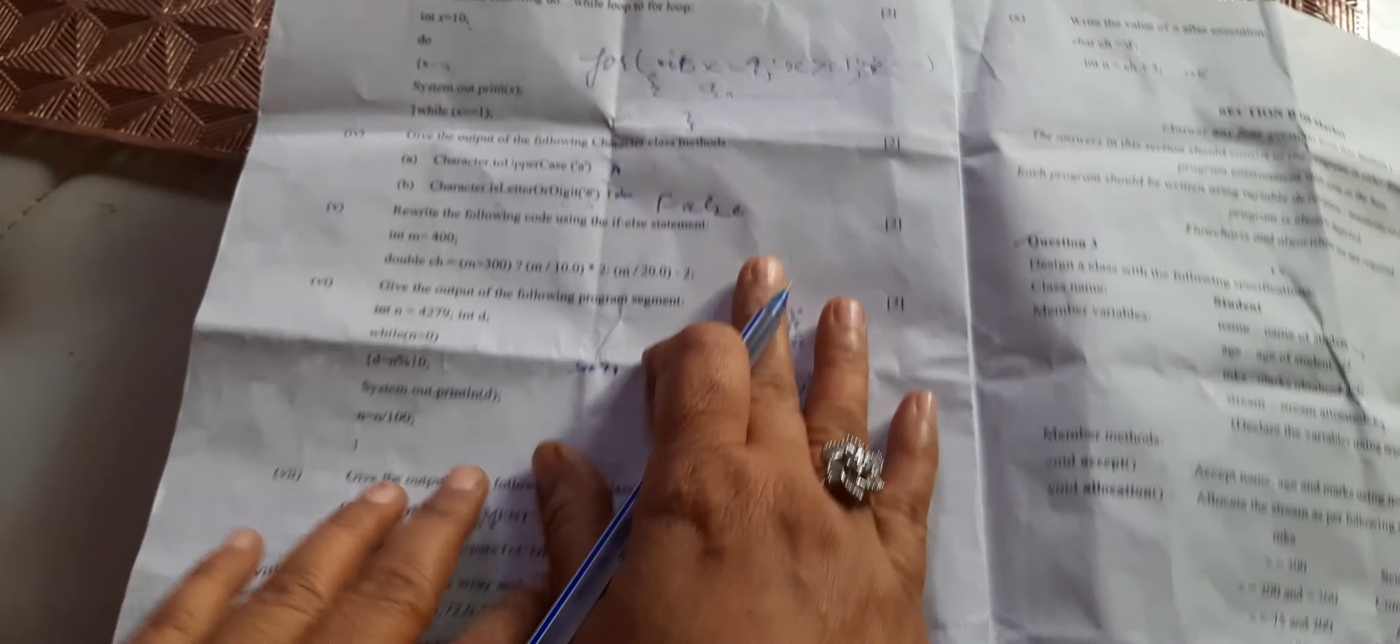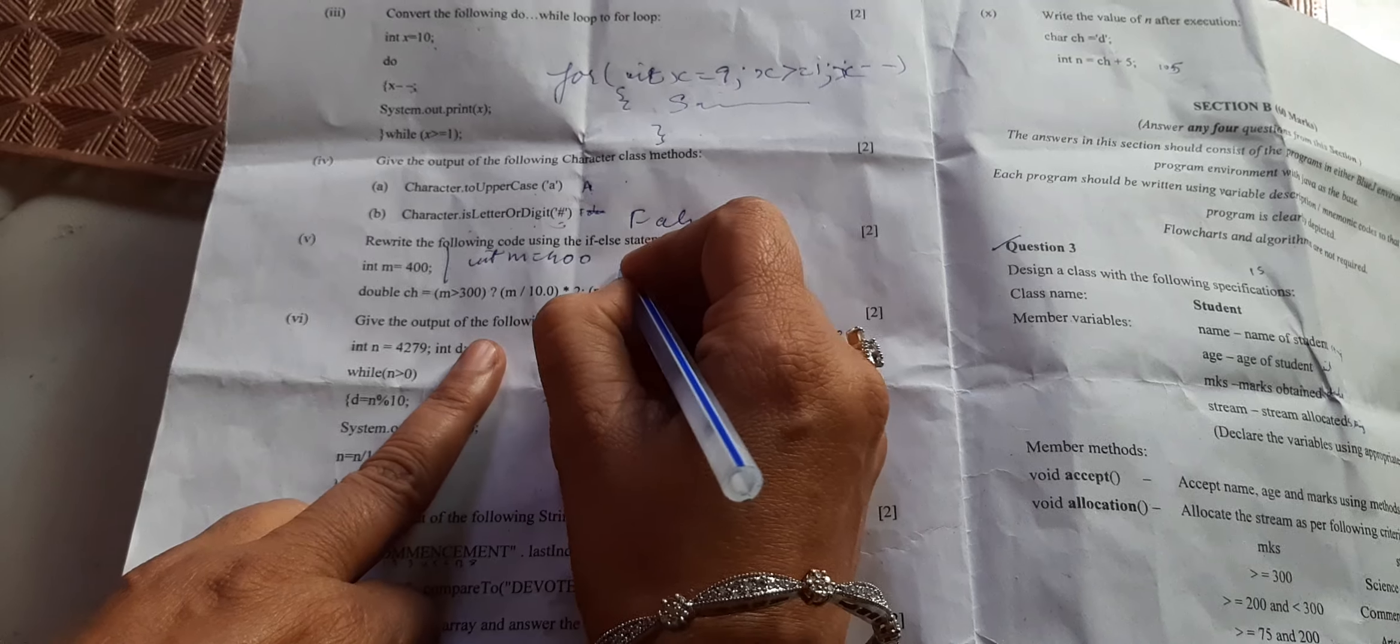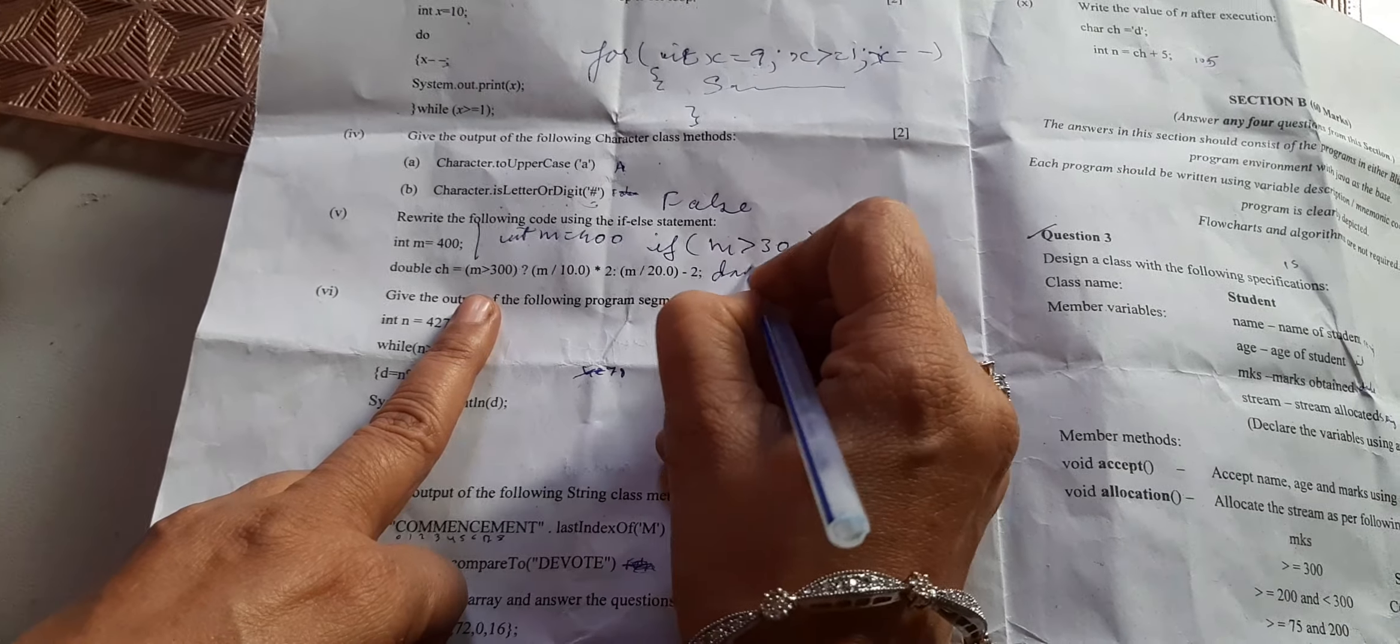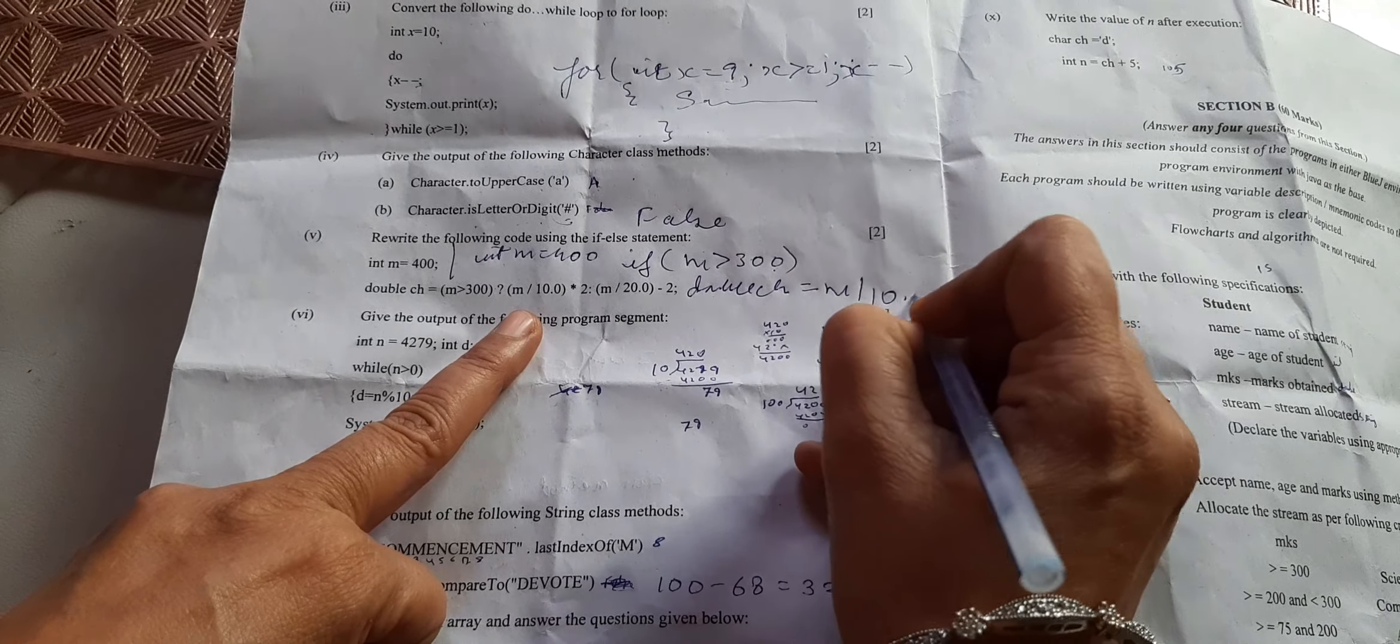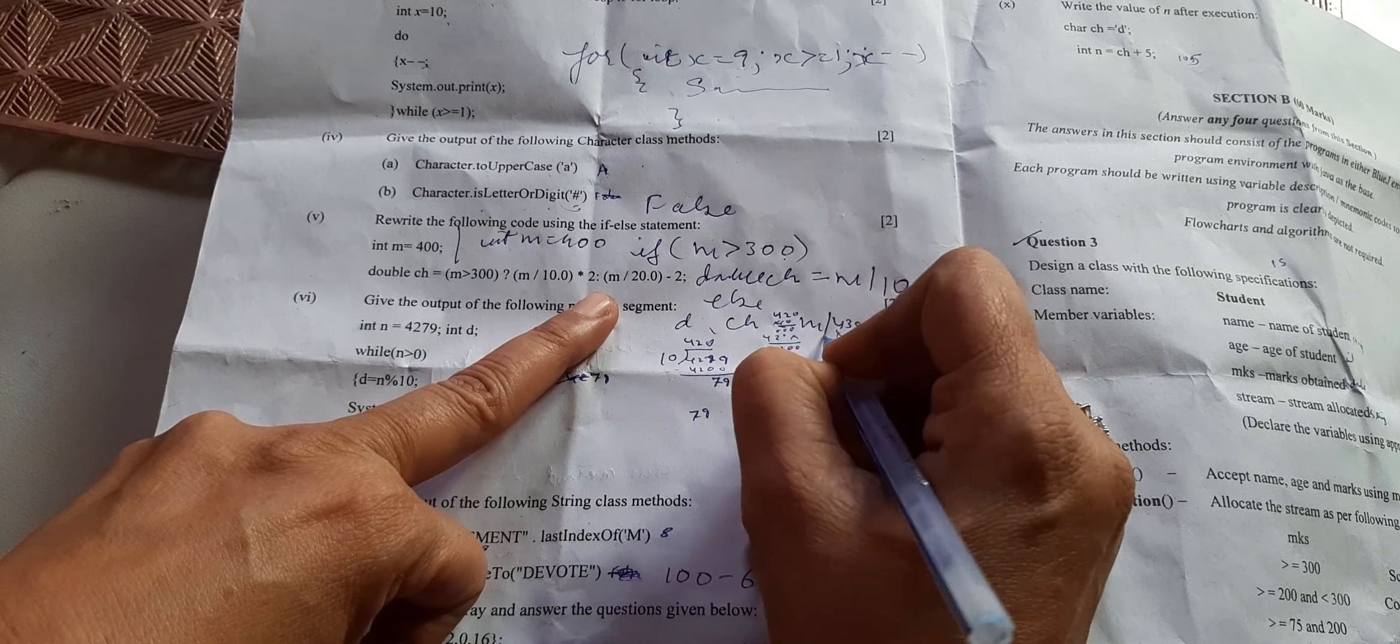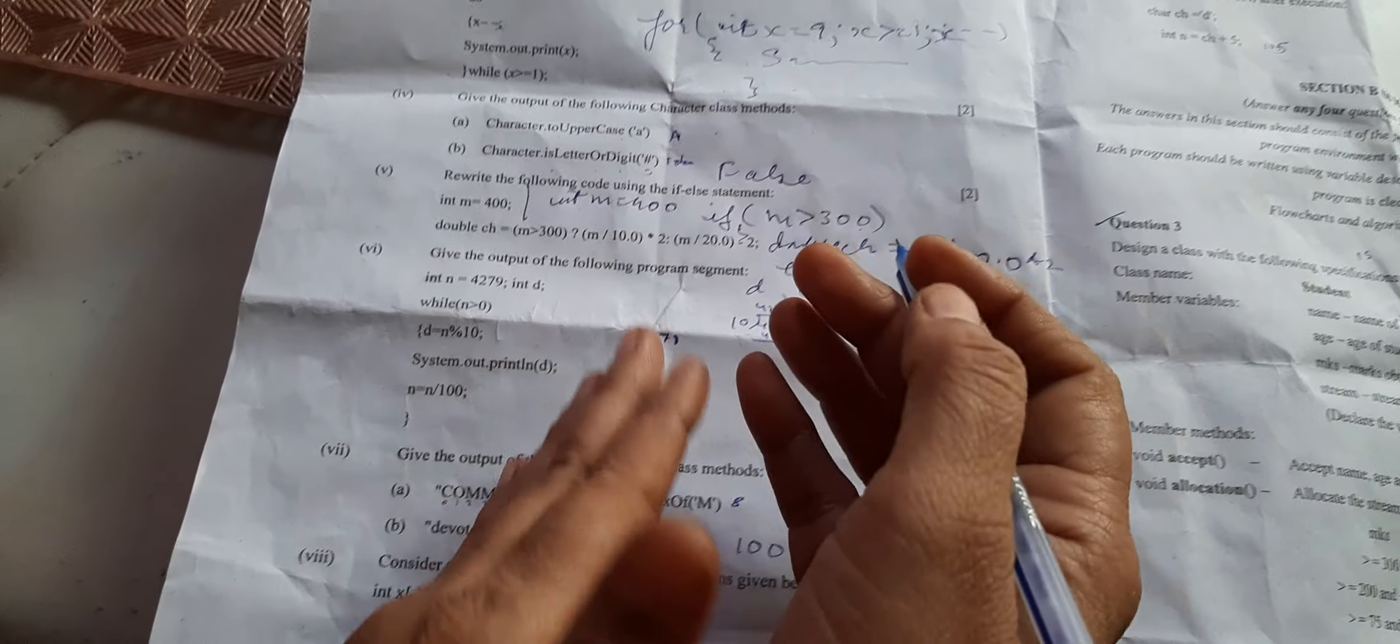Rewrite the following code using if-else. First we'll write int m equals 400. After that we'll write: if m is greater than 300, then we are going to write double ch equals m/10.0*2, else ch, double ch equals m divided by 20.0 minus 2, and close. Open curly bracket, close curly bracket. This is a conversion of ternary operator into if-else.